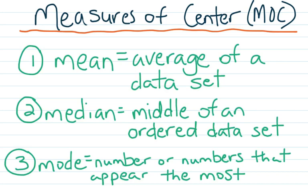When I say measures of center, you can abbreviate that MOC. There are three: mean, which is the average of a data set; median, which is the middle of an ordered data set; and mode, which is the number or numbers that appear the most within a set. It's possible to have no mode at all, multiple modes, or a single mode.